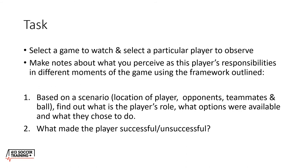Laying it out practically: the task you might choose to do with your players is to select a game to watch and pick a particular player to observe — one with a similar role and set of tasks to yours within a known game model and system of play. Make notes about that player's responsibilities in different moments using the framework we outlined: the four locations, the tasks, the risks versus rewards when in possession in a certain portion of the pitch. You might do this multiple times, and before the end of the season your players have developed a risk versus reward map.